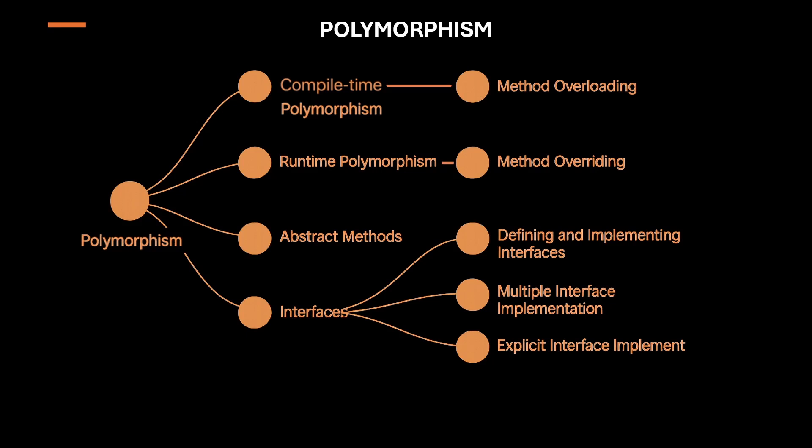In today's video, we are diving deep into one of the most powerful pillars of object-oriented programming — polymorphism. You will learn what polymorphism really means and why it's essential, the difference between compile-time and runtime polymorphism, how method overloading and method overriding achieve these two types, the role of abstract methods and interfaces, and how these concepts help you write code that is flexible, maintainable, and ready to scale.